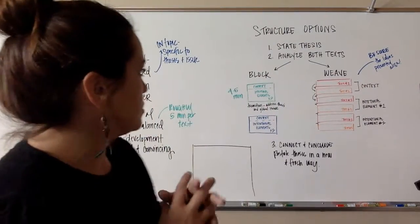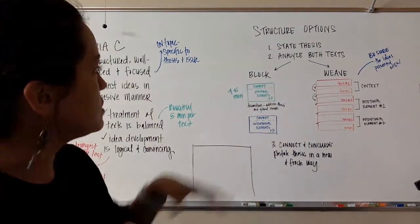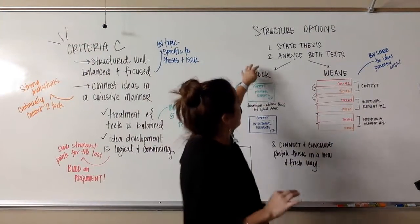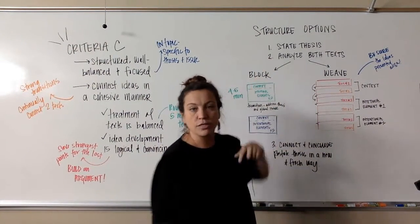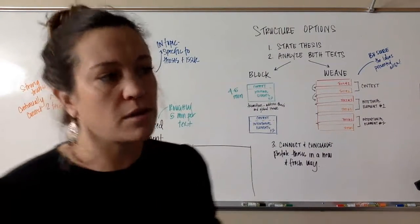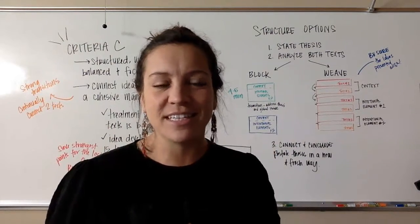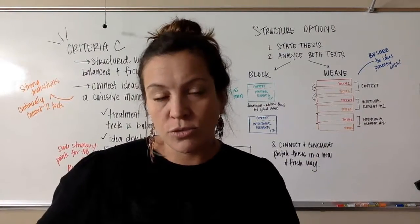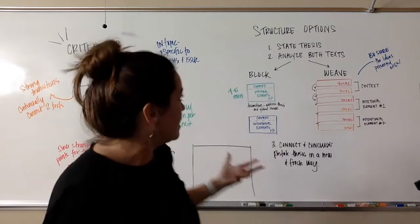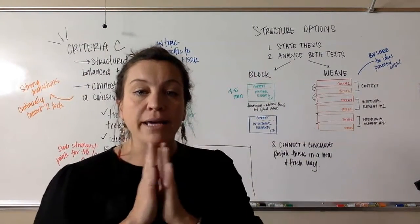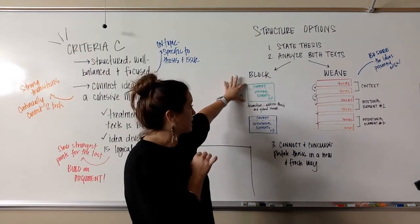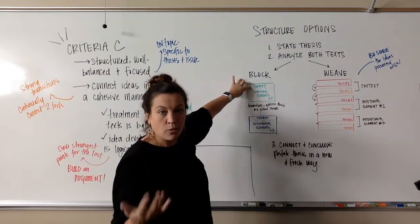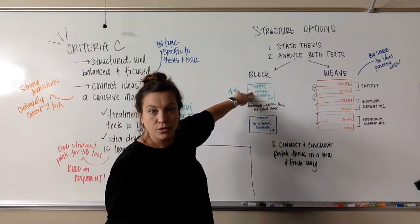Looking at structure options, we have two different ways to go. The first is the block structure; the second is the weave structure. No matter which you choose, the first thing you do is state your thesis — go straight into it, don't say 'today I'm going to be talking about this and this.' Give a little context for your global issue, then move into analyzing both texts. In the block structure, I focused on text one first: the context of that text, what it has to do with my point, and then my two intentional elements that the author used.